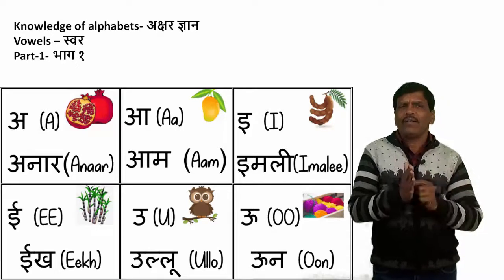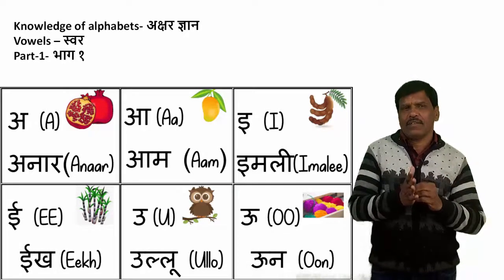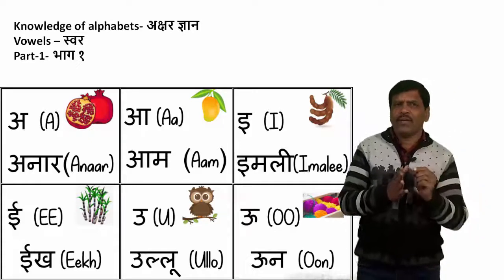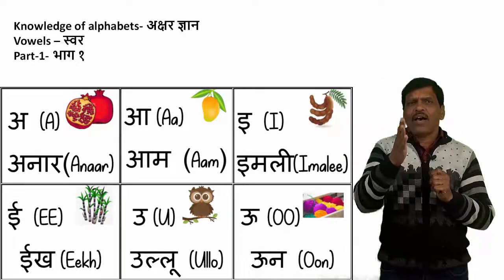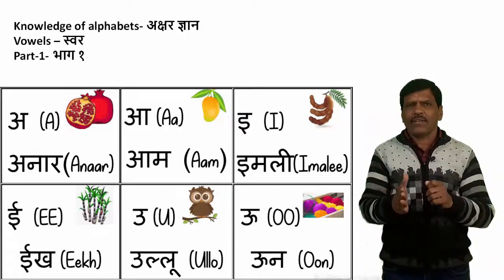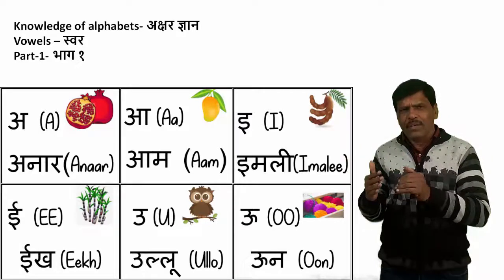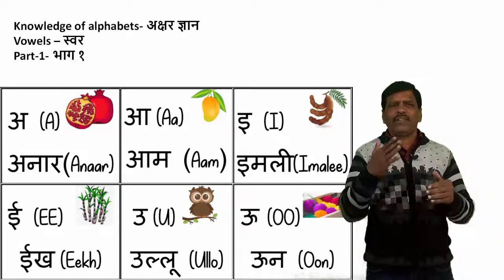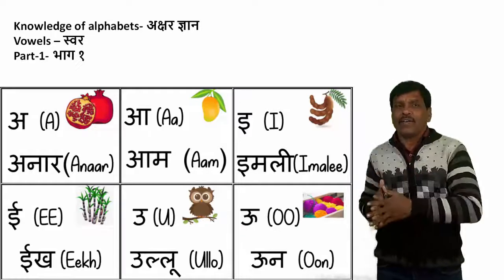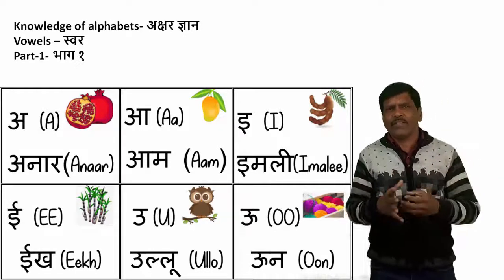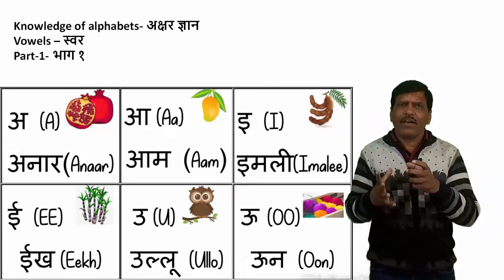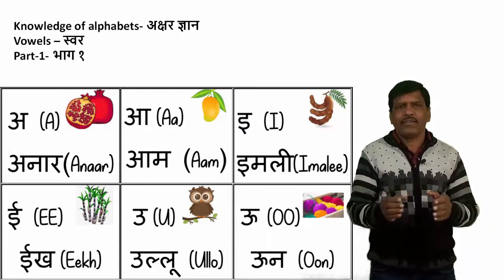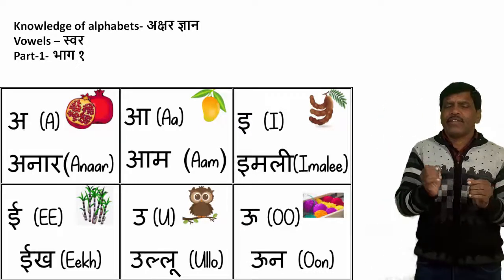The first alphabet is A, and we say A for anaar. In English we say A for apple, A for X. Here we start A for anaar — anaar is a fruit, pomegranate. We say A for anaar.